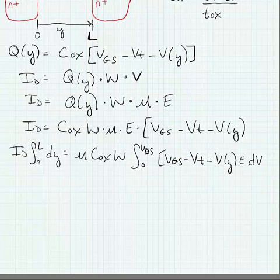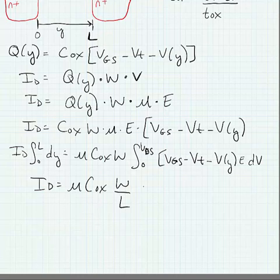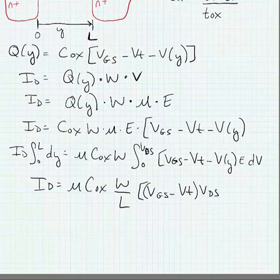Okay, and if we were to carry these integrals out, we would find that the drain current is equal to mu times Cox times W over L times the quantity VGS minus Vt times VDS minus VDS squared over 2.